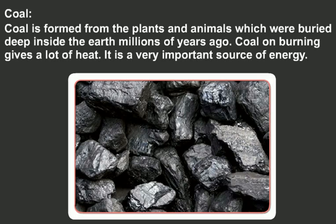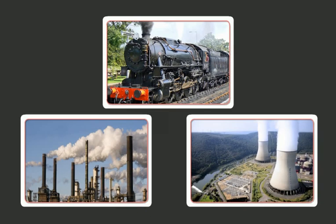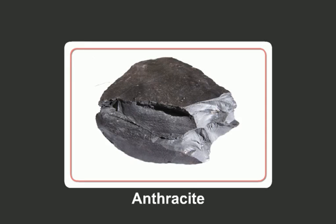Coal is formed from plants and animals which were buried deep inside the earth millions of years ago. Coal on burning gives a lot of heat; it is a very important source of energy used to run rail engines, industries, and thermal power plants for producing electricity. The demand for coal is growing with rapid industrialization. Anthracite is the best quality of coal. The present coal reserves are concentrated in the USA, Russia, and China, which hold about 60 percent of the world's coal. Total world coal production stands at about 3,800 million tons per year, accounting for 31 percent of total energy production.